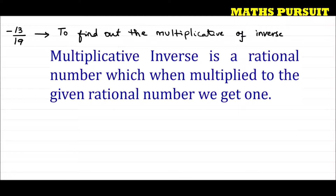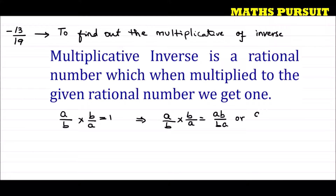For example, if the given rational number is a upon b, as per the definition, the multiplicative inverse is a rational number which when multiplied to a upon b gives 1. That means if we multiply b upon a to a upon b, we get a·b upon b·a, which simplifies to 1. So the multiplicative inverse of a upon b is b upon a.